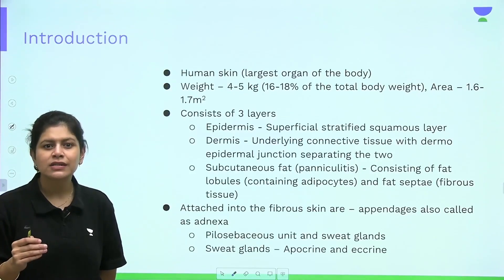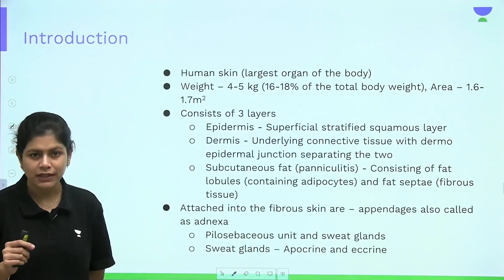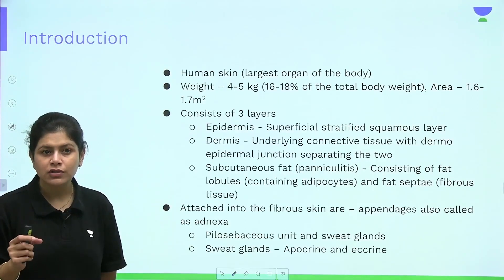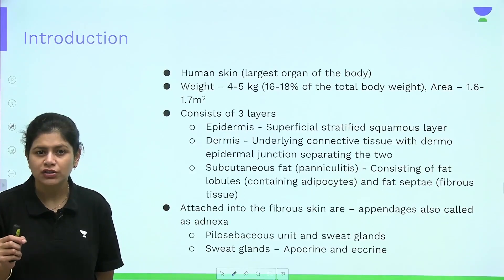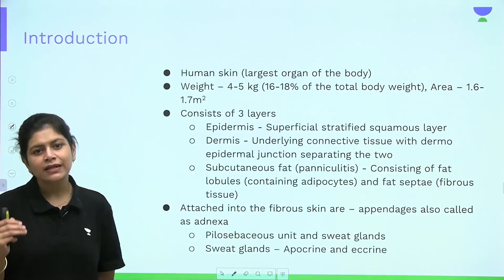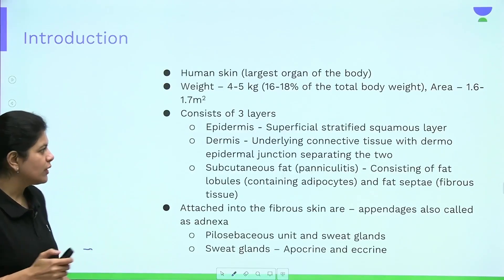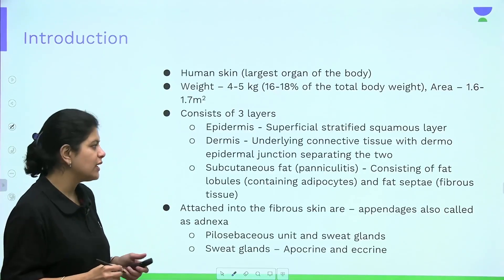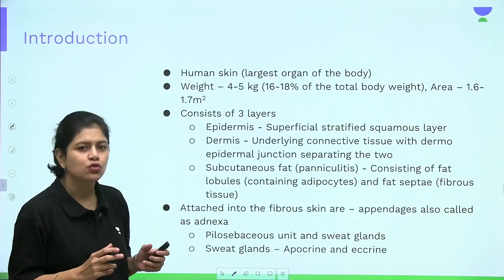The epidermis is the superficial stratified squamous epithelium. The dermis is the underlying connective tissue, with a very important structure called the dermoepidermal junction, which separates the epidermis from the dermis. Below that comes the subcutaneous fat, that is the paniculus, which consists of fat lobules containing adipocytes and fat septae consisting of fibrous tissue.